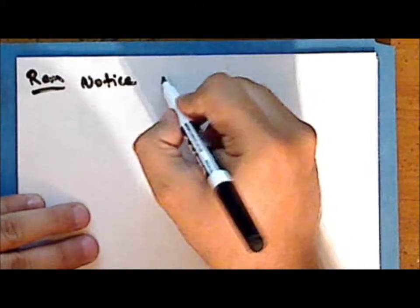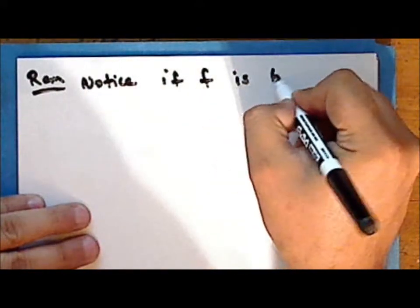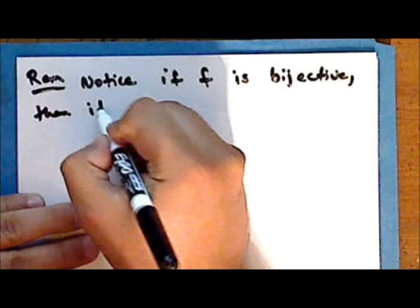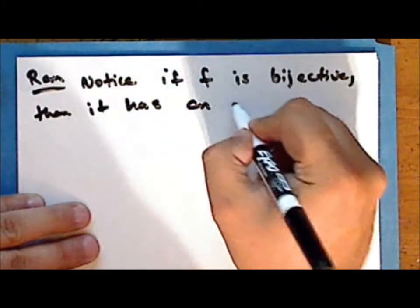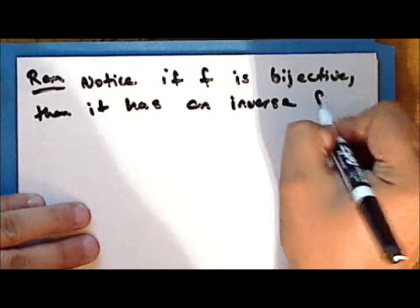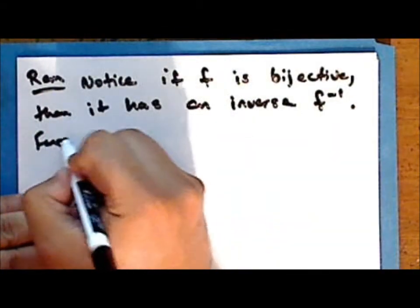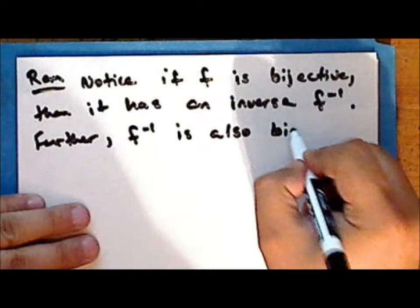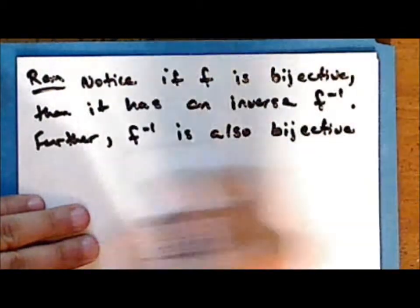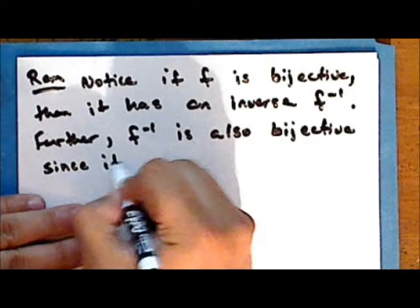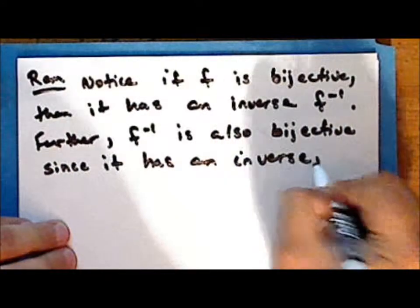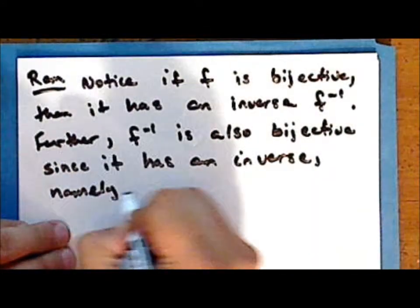Notice that if the function f is bijective, then it has an inverse. Furthermore, f⁻¹ is also bijective, since it has an inverse — namely the original function f.